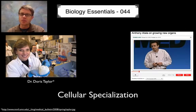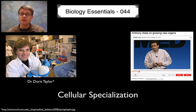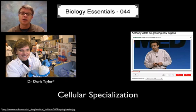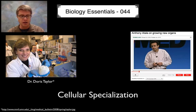Hi, it's Mr. Anderson. Welcome to Biology Essentials video 44. This is on cellular specialization — that's how cells become tissues, tissues become organs, and organs become us. In other words, it's how cells decide what kind of cell they're going to become.